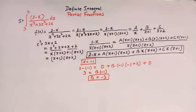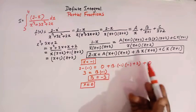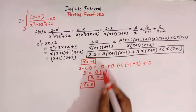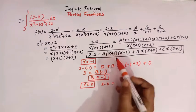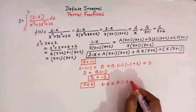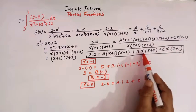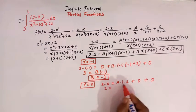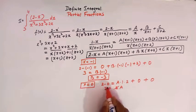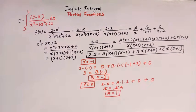Now to get the value of A, let us take x equals 0. These are simple values of x from which we can find out the constants. When x is 0, this expression becomes 2 minus 0 equals 2, and we have A times (0 plus 1)(0 plus 2) equals 2a. The B and C terms become 0. So 2 equals 2A, and A equals 1.